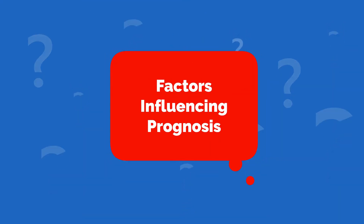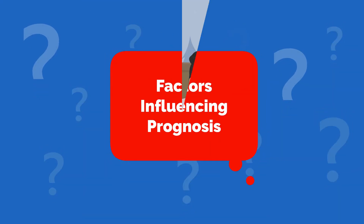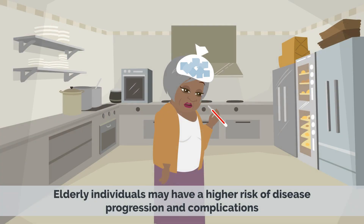Factors Influencing Prognosis. 1. Age. Older age is generally associated with a poorer prognosis in myelofibrosis. Elderly individuals may have a higher risk of disease progression and complications.